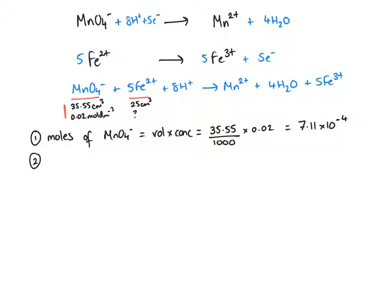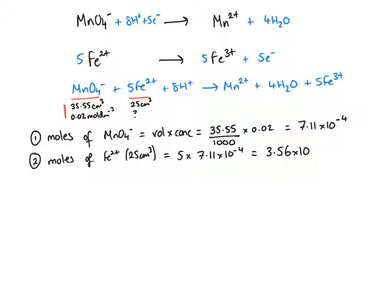The next thing to do is to work out the moles of Fe²⁺. Remember, this is in the 25 cm³ that we pipetted. That is going to be 5 times the moles of the manganate, which gives us 3.56 × 10⁻³ moles.